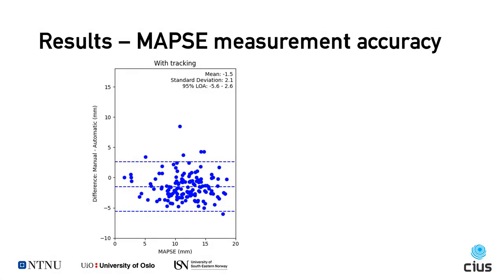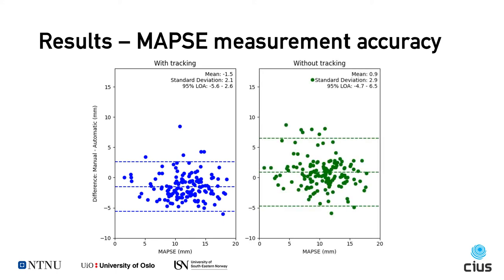The MAPSE accuracy was measured by comparing with manual B-mode annotations. The mean difference was -1.5 mm with a standard deviation of 2.1 mm. Here you can see a Bland-Altman plot of this difference. For comparison, we also measured the accuracy without using tracking, and as these Bland-Altman plots show, the precision was reduced when not using tracking.